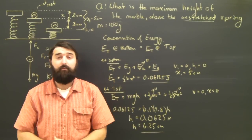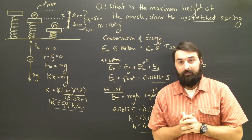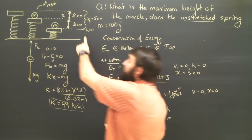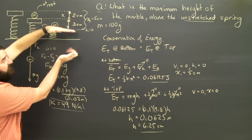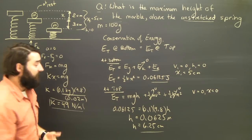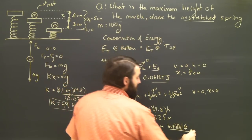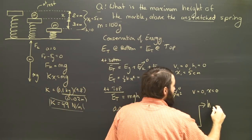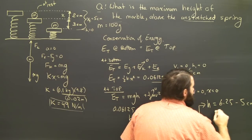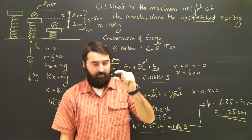If this were a test, you might confidently write that the marble achieves a height of 6.25 centimeters — and you would get the answer wrong. The question asks for the height above the unstretched spring. We set H equal to zero at the fully compressed spring position, which is 5 centimeters below the unstretched position. So we must subtract 5 centimeters: the actual answer is 6.25 minus 5 equals 1.25 centimeters above the unstretched spring.